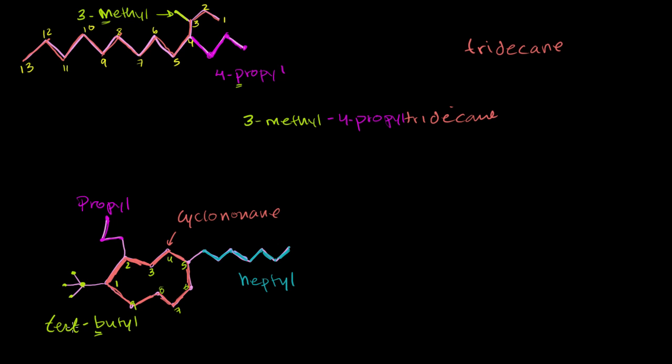Let me write that in cursive. Let me get some more space here. So it is 1-tert-butyl. Then the next one alphabetically is the heptyl group. That's H for heptyl. So then it is 5-heptyl, and then we have the propyl. And then it is 2-propyl, and then finally, cyclononane. And we're done.